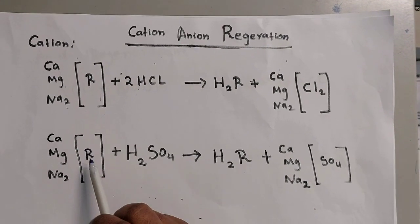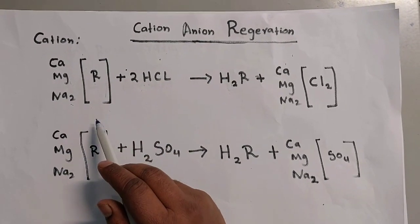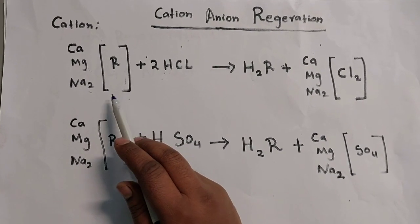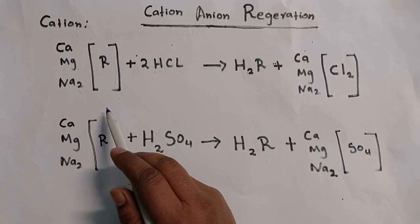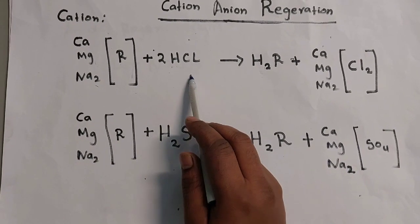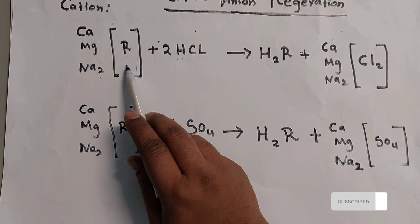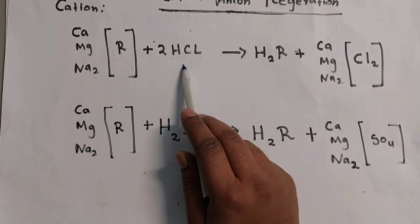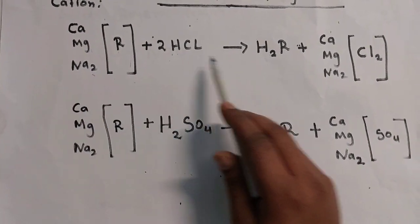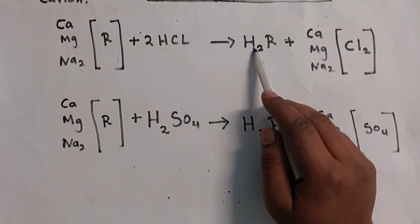The cation resin absorbs all the positive ions, so the resin is going to be exhausted — means saturated. All these saturated resins we need to clean and make pure again. We are making regeneration by using hydrochloric acid or H2SO4. For example, using hydrochloric acid: calcium, magnesium, sodium — everything present in the resin — all we remove. They react with the hydrochloric acid. Calcium chloride, magnesium chloride, sodium chloride go to separate. Finally we find the pure resin again. This is the regeneration.